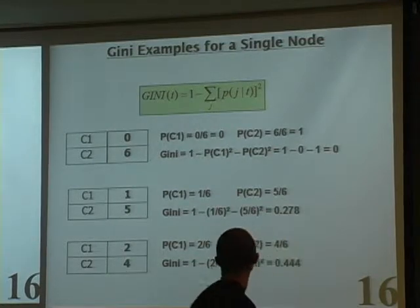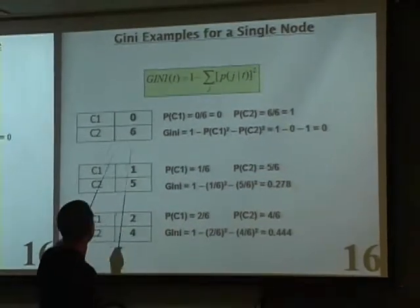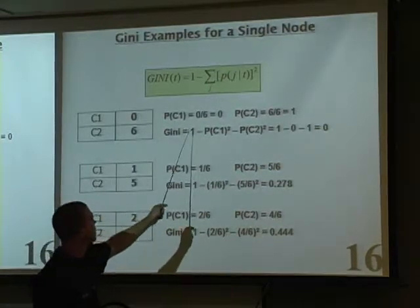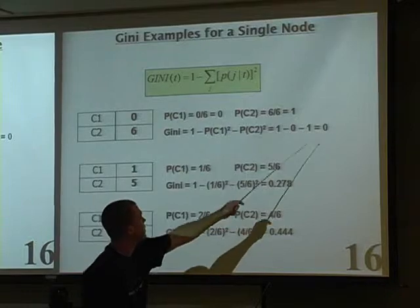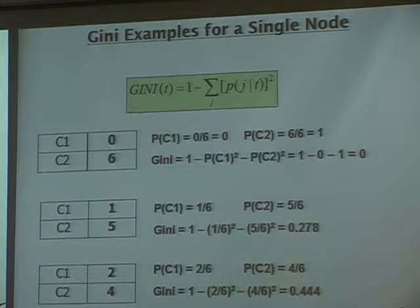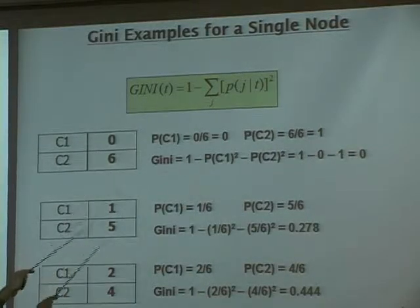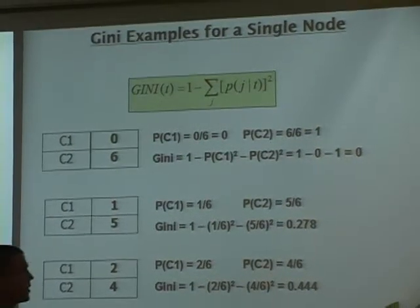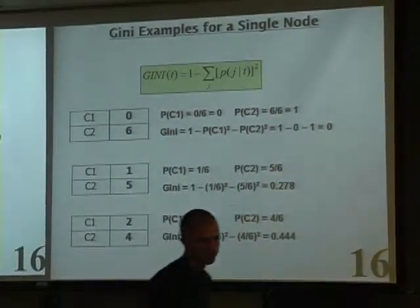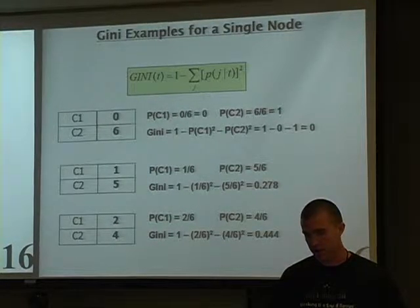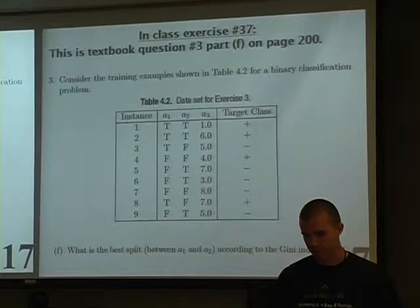For node-wise Gini computations: a completely pure node — say 6 and 0 — gives one minus 0 squared minus 1 squared, which equals zero. Gini increases as you approach 50-50, measuring the lack of purity. You take all probabilities, square them, add them up, then subtract from one.